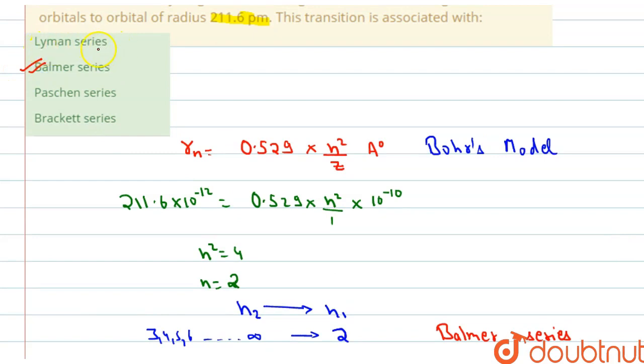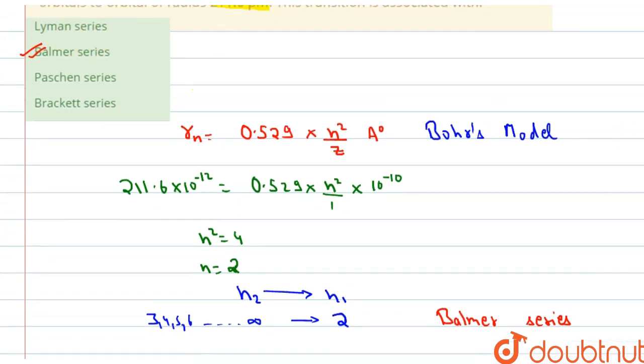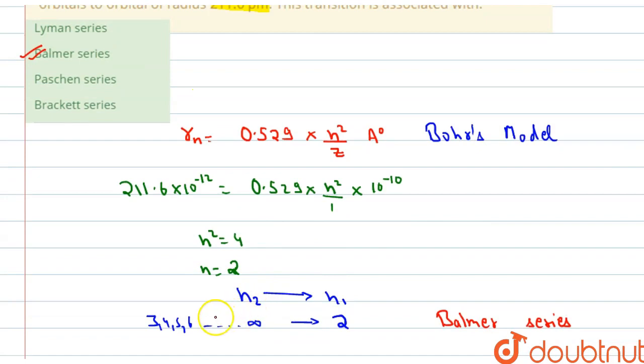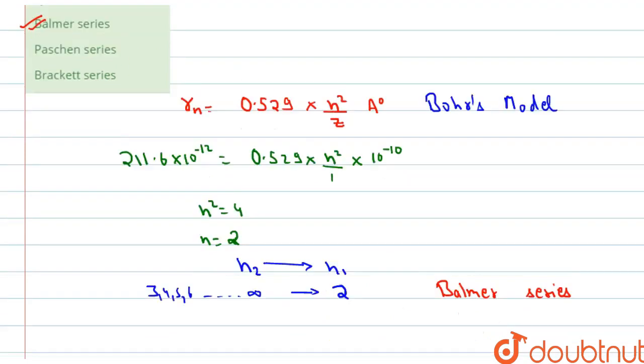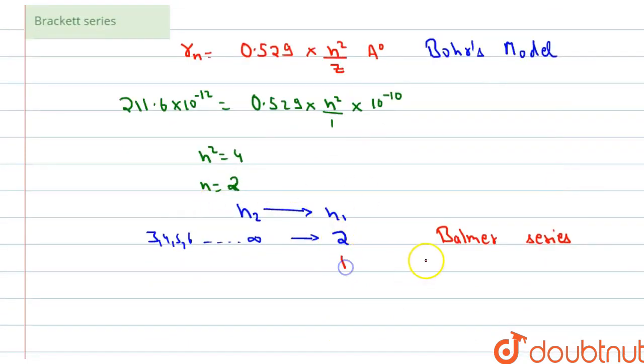So let's talk about the Lyman series as well. This is the series like Balmer series. If the electrons come from any orbital to 2, this is Balmer series. If electrons come from any orbital to 1, this is called Lyman series.